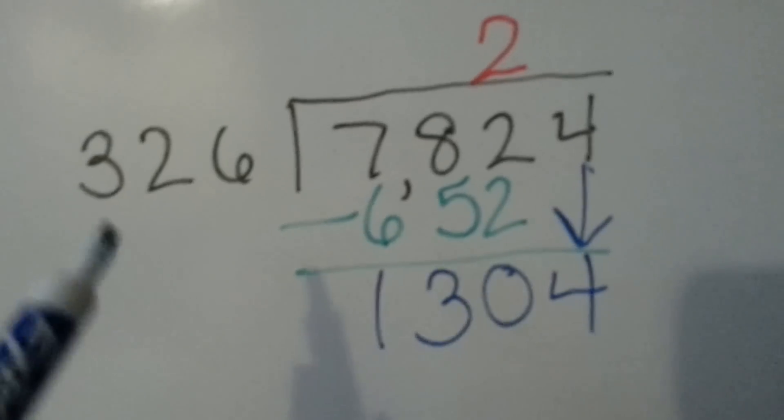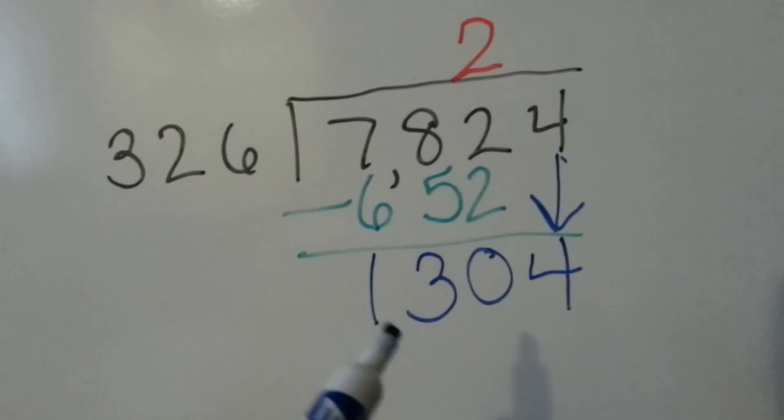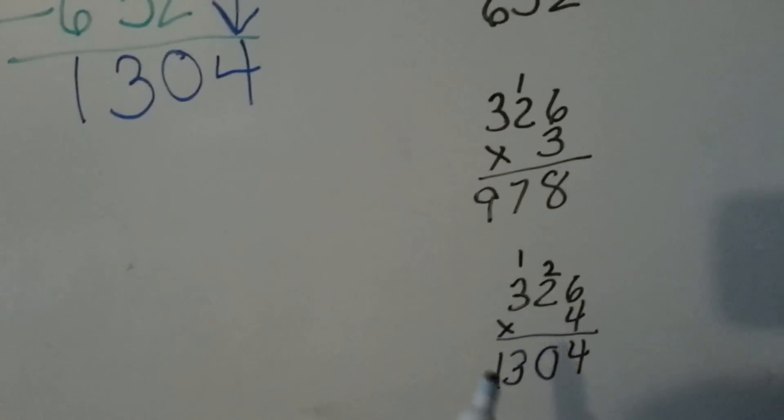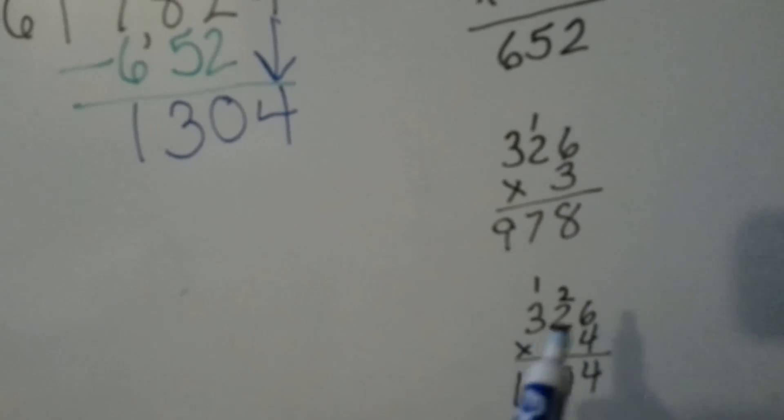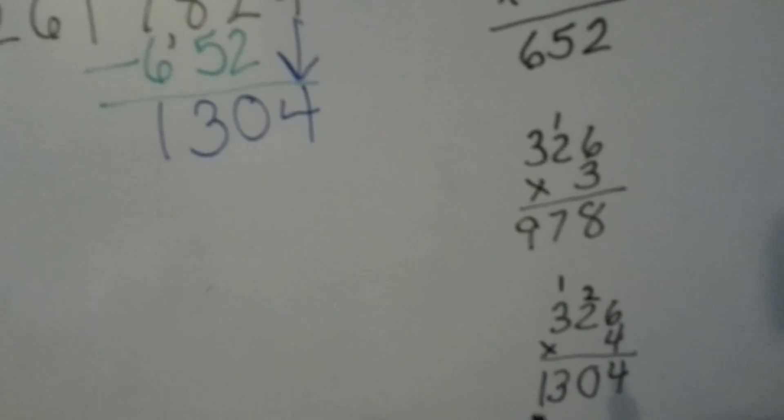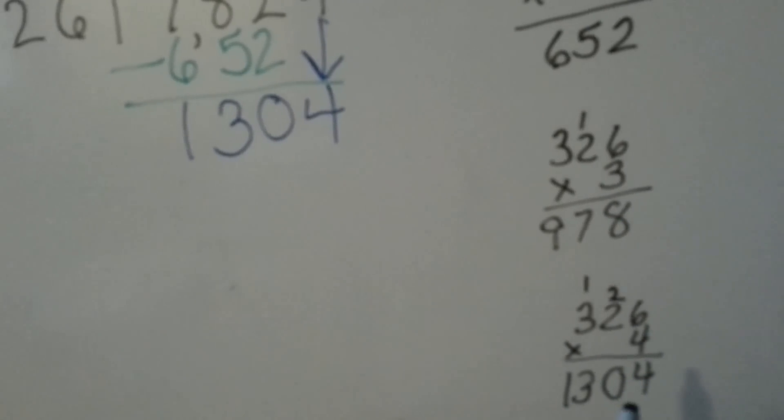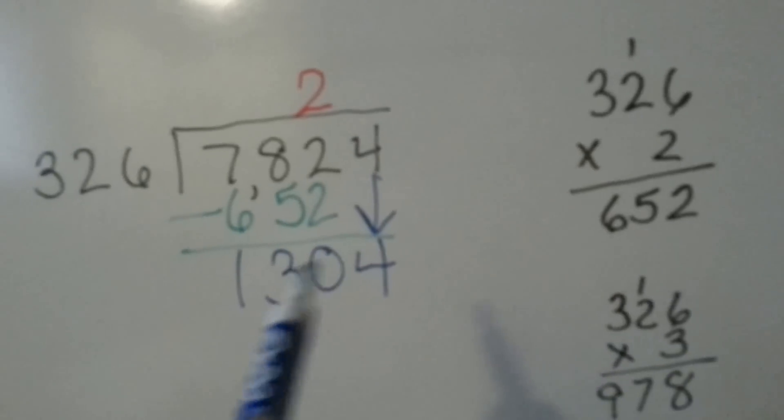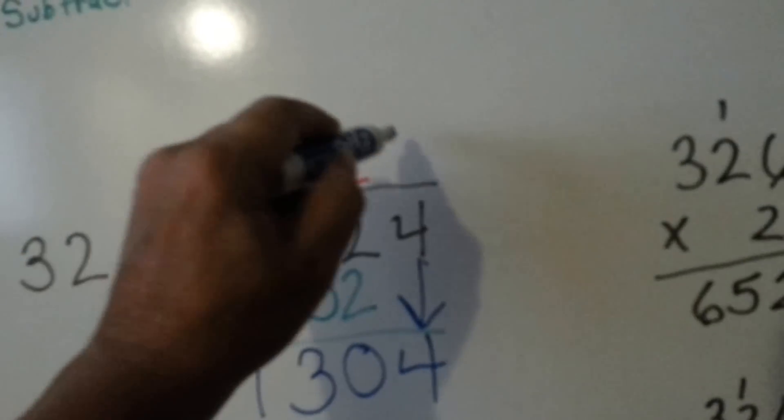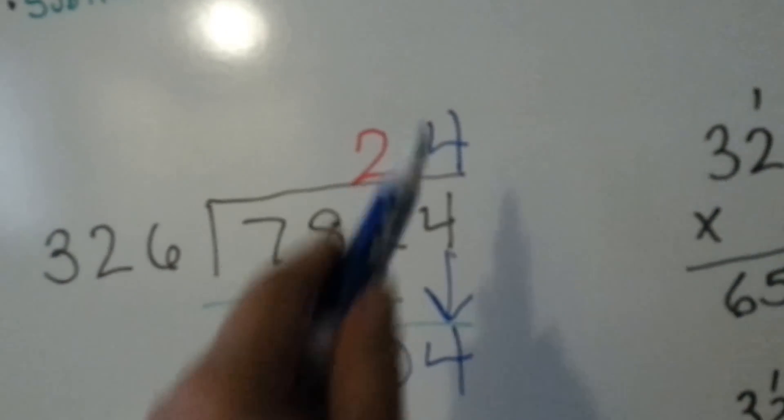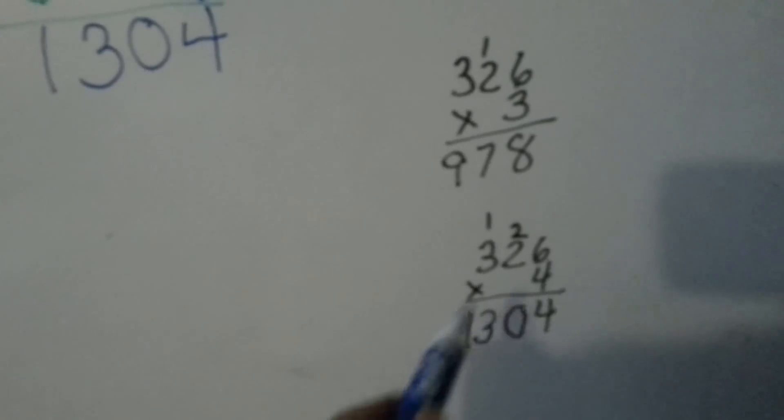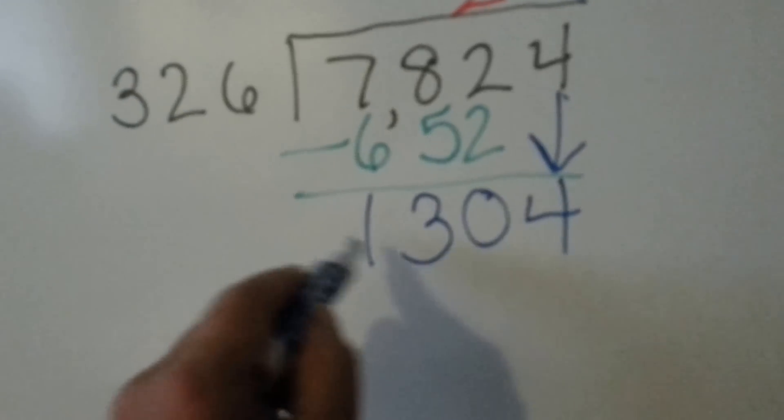Now we need to ask ourselves, how many times can 326 go into 1304? Well, I did some math on the side and 326 times 4 is exactly 1304. So we know that a 4 can go up here and we know that 326 times 4 is 1304.